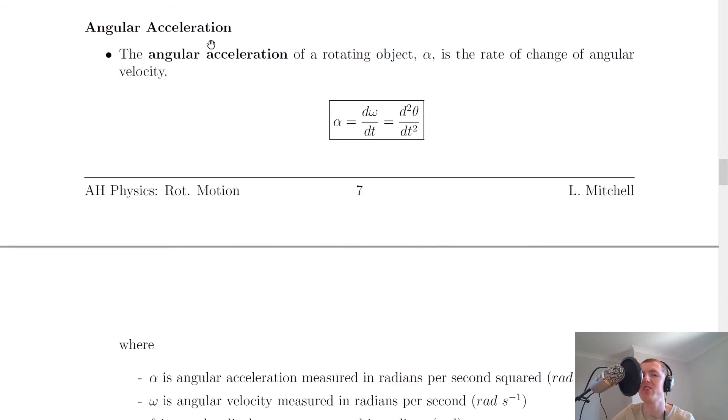Lastly we have angular acceleration. The angular acceleration of a rotating object alpha is defined as the rate of change of angular velocity, just like linear acceleration is defined as the rate of change of linear velocity. Just like for linear acceleration we saw that a equals dv/dt, which equals d²s/dt², we have a very similar relationship for angular acceleration.